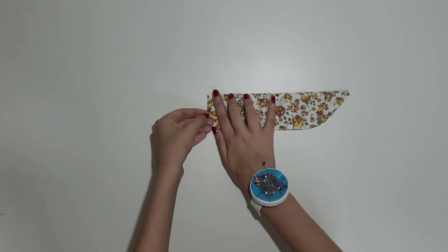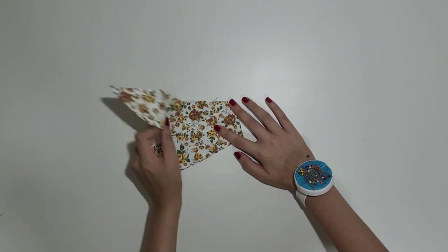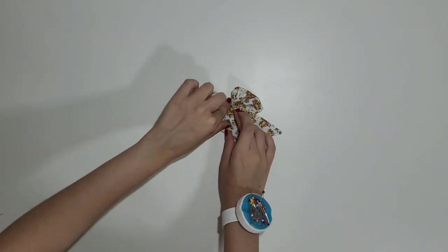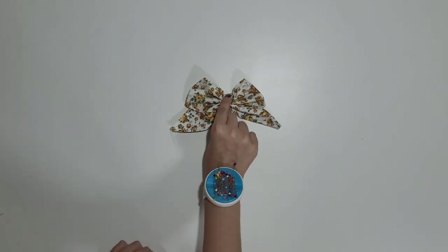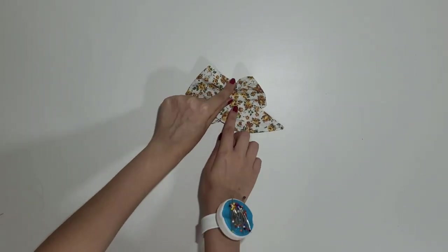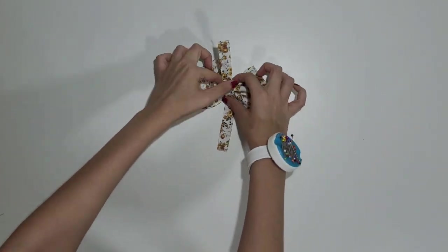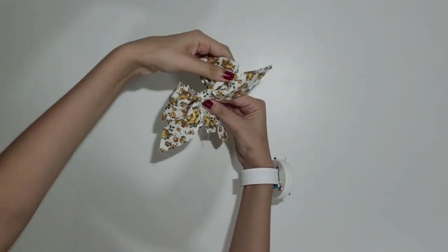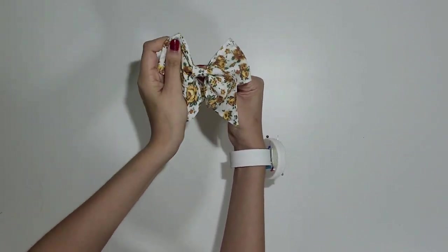Now mark the middle and fold both edges inside, leaving around 4 fingers in the middle. Then pinch the fabric to create the form of the bow. Now use the tie to secure the form and stitch it. You can also use hot glue here if you prefer.